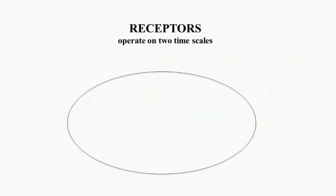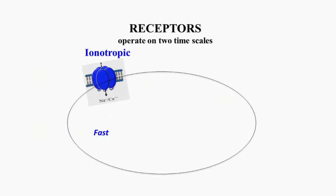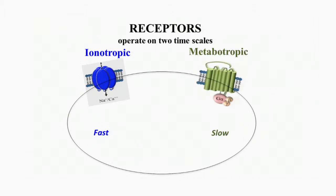Cell surface receptors that respond to extracellular ligands are thought to operate on two timescales. Ionotropic receptors, such as ligand-gated ion channels, are fast and allow the entry of ions into or out of the cell. Metabotropic receptors, such as G protein-coupled receptors, on the other hand, are slow and function by activating longer-lived downstream signaling cascades.